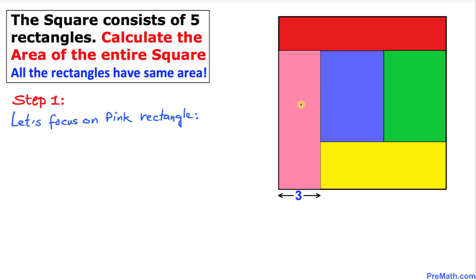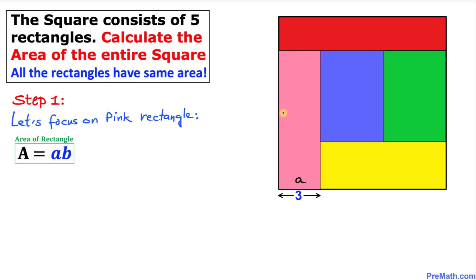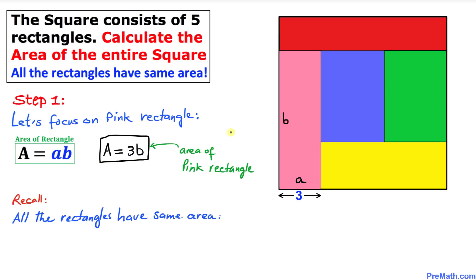Let's focus on the pink rectangle right up here. We have been given that one side of this rectangle is 3 units. We want to calculate the area of this pink rectangle. The area formula is A = a × b. Let me call the horizontal side of this pink rectangle 'a' and the vertical side 'b'. So the area becomes A = 3 × b, which is 3b.